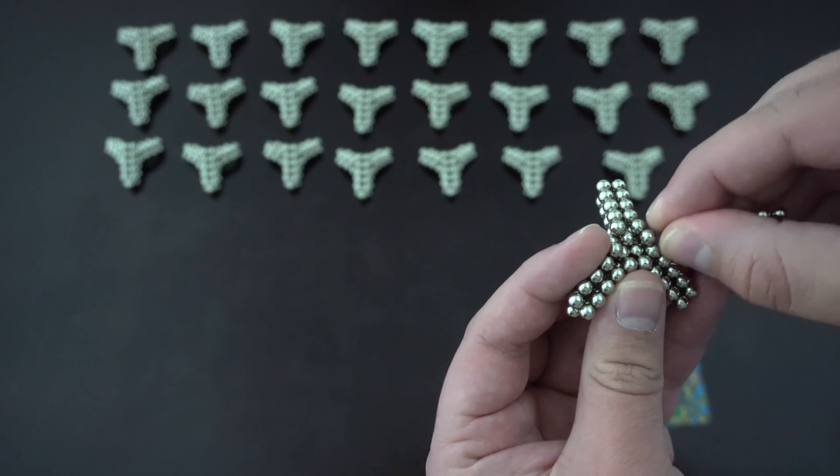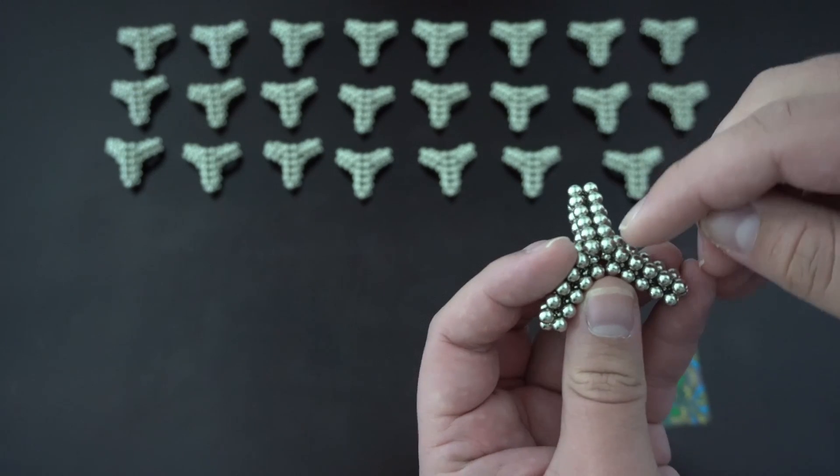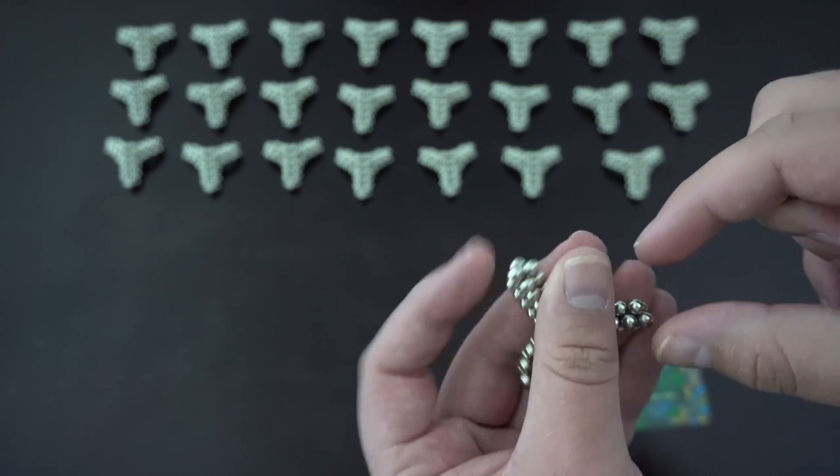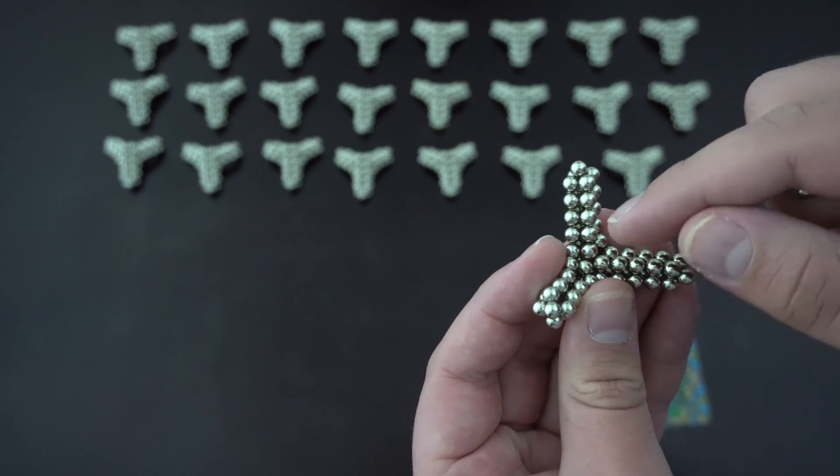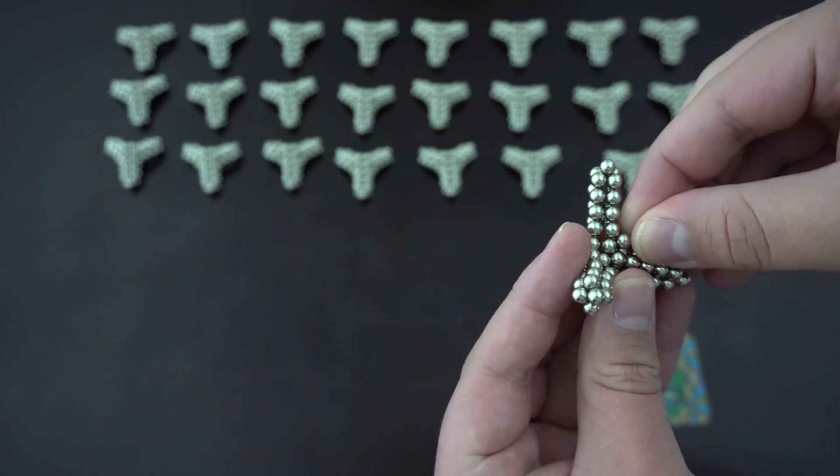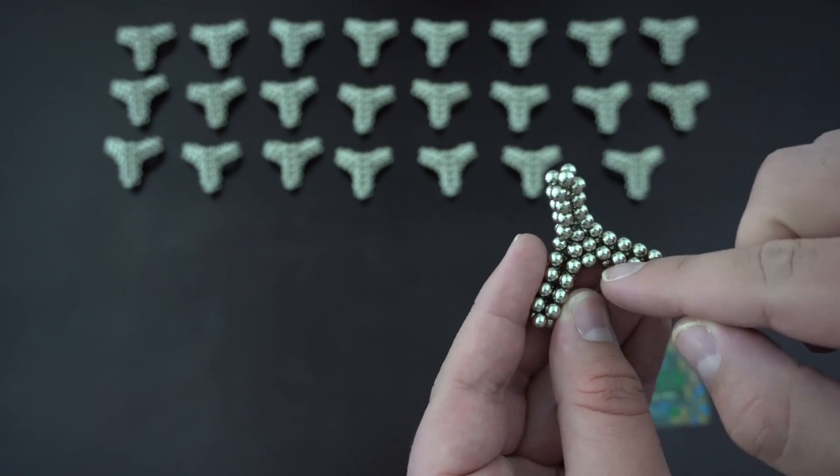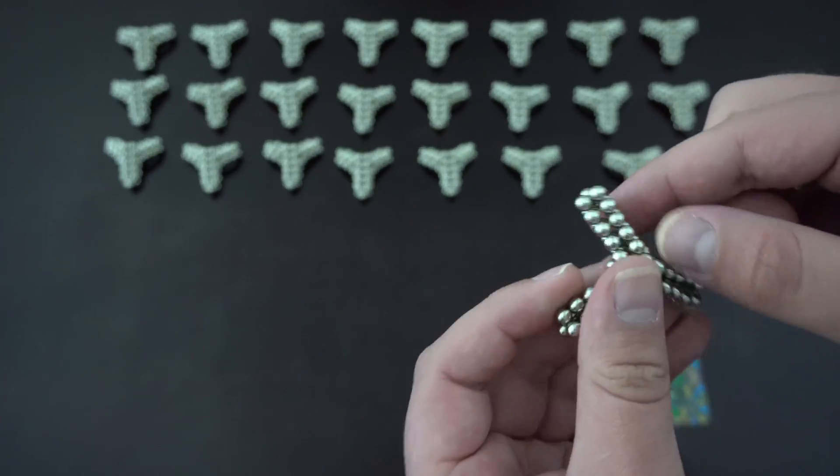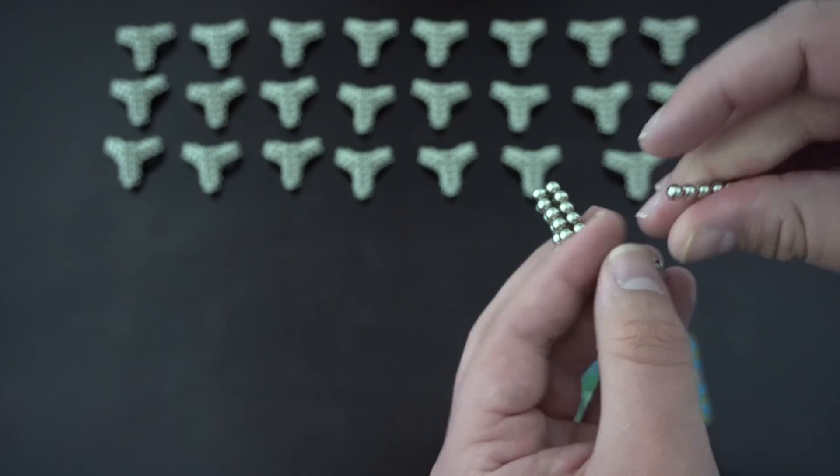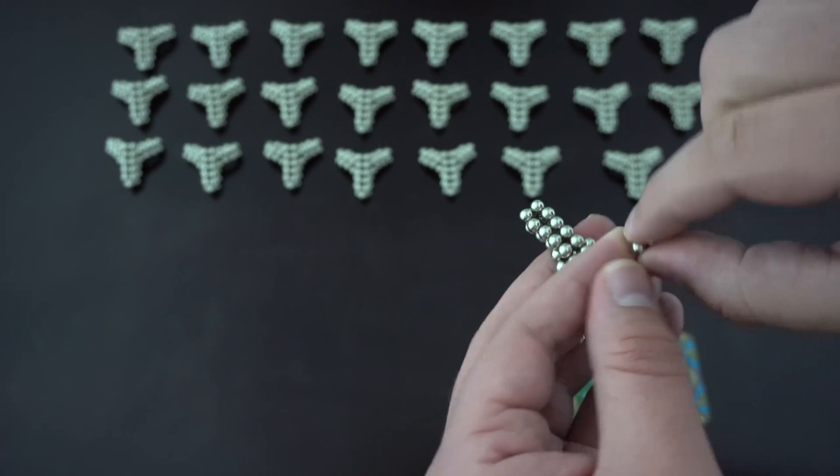Flip it upside down. There's a space here - you need to put a single magnet in there and make sure that these three here are all touching each other. And then finally take two magnets and place them right here.